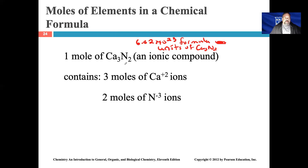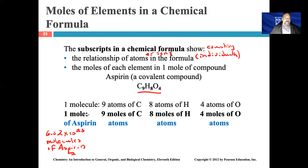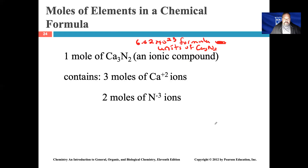To summarize: for a covalent compound, one mole — that is 6.02 × 10²³ molecules — contains the corresponding moles of each atom as given by the subscripts. For an ionic compound, one mole — 6.02 × 10²³ formula units — contains the corresponding moles of ions, not atoms but ions, as given by the formula.